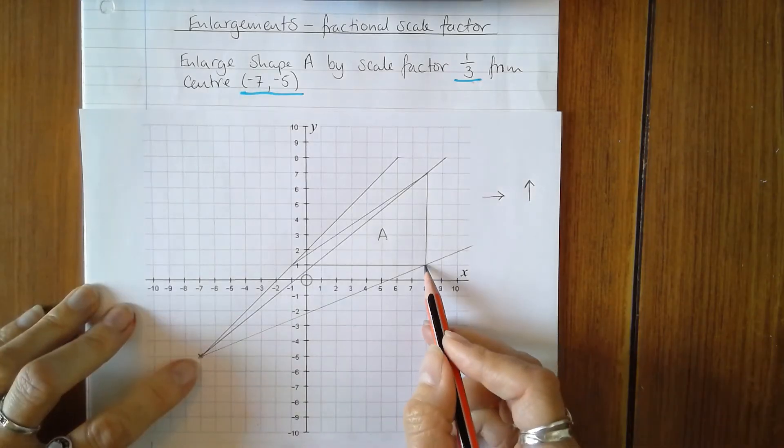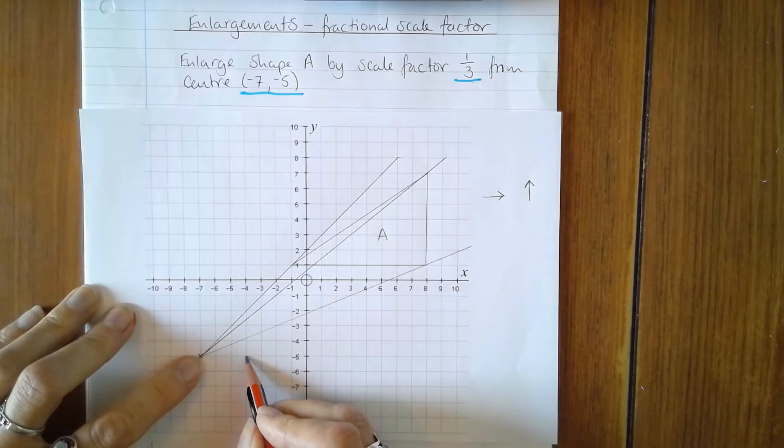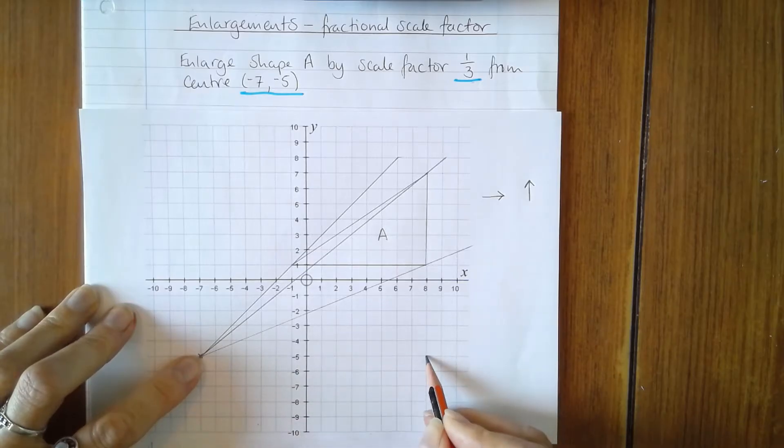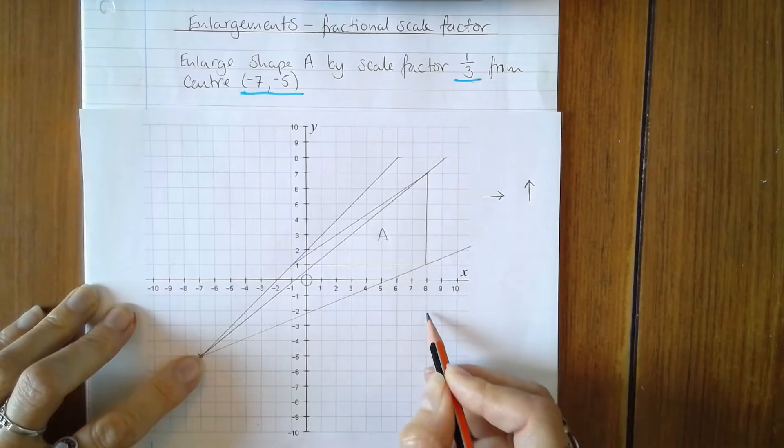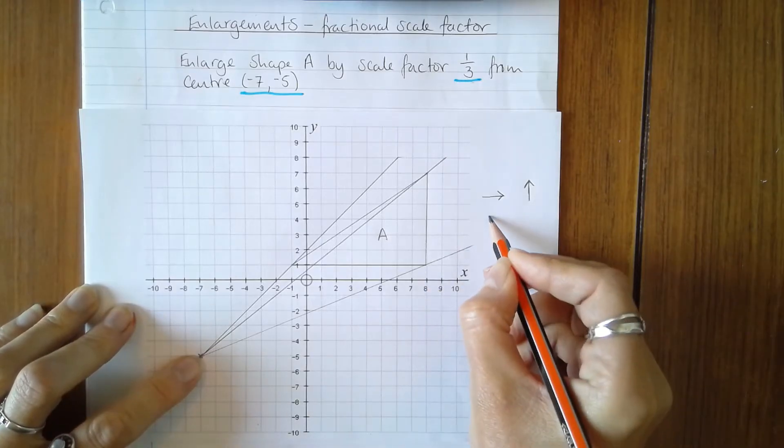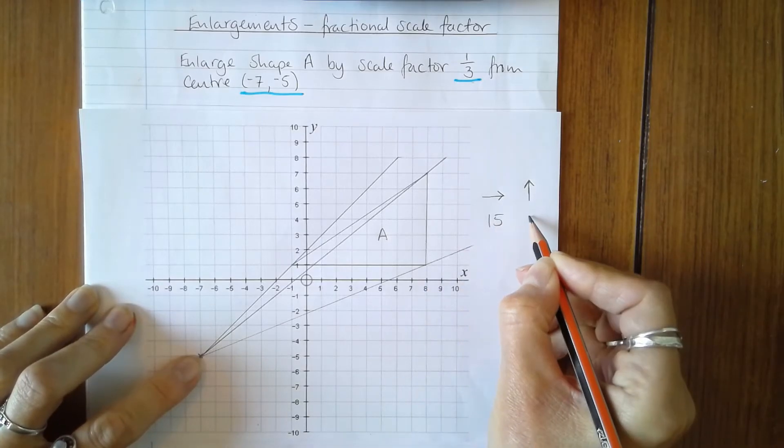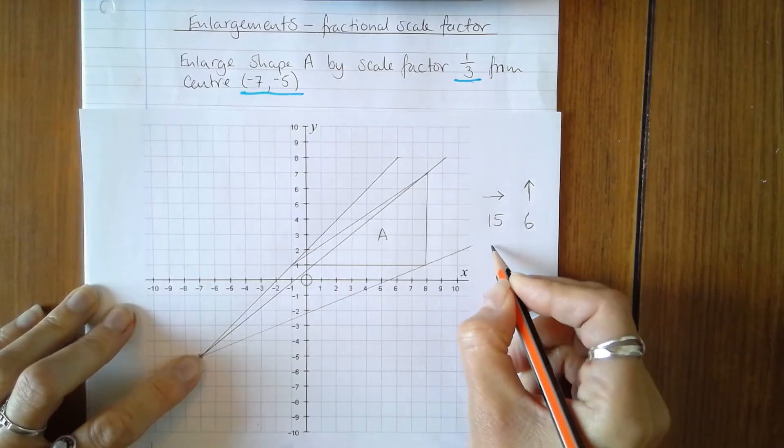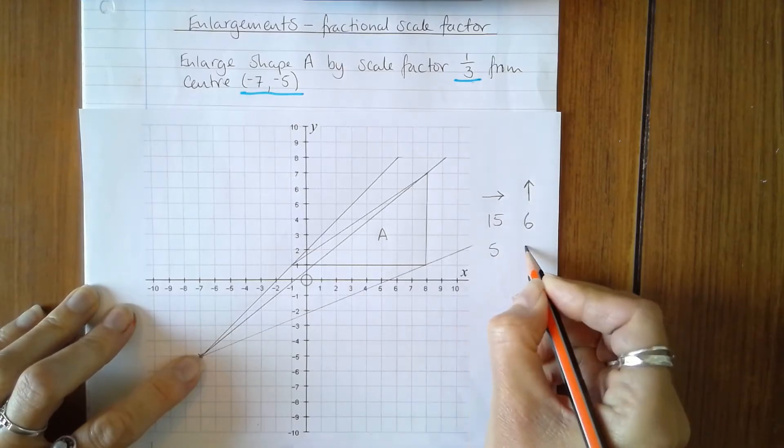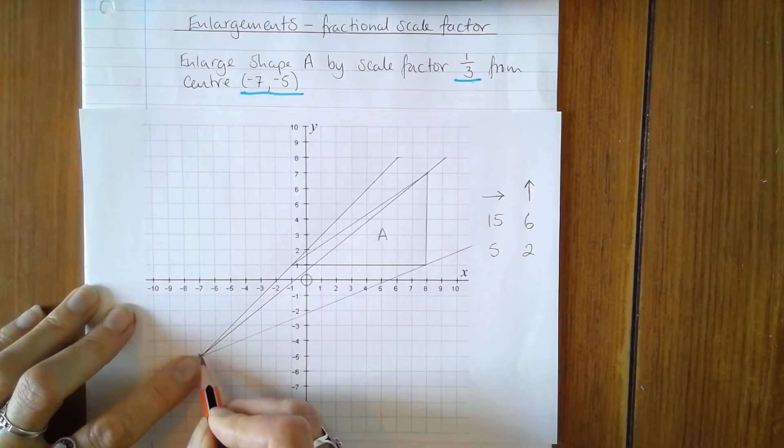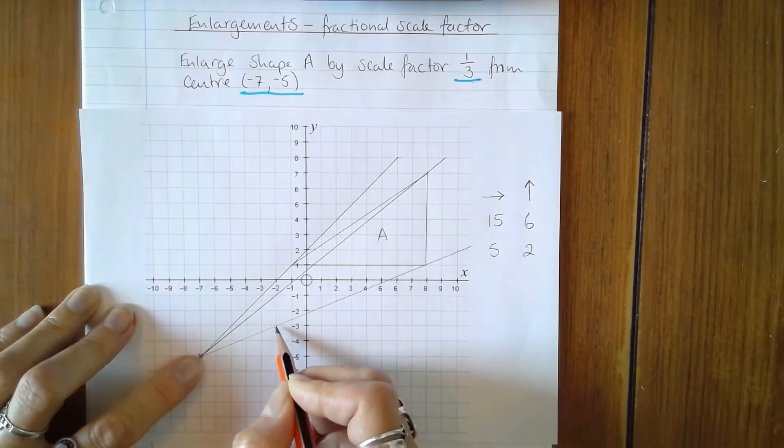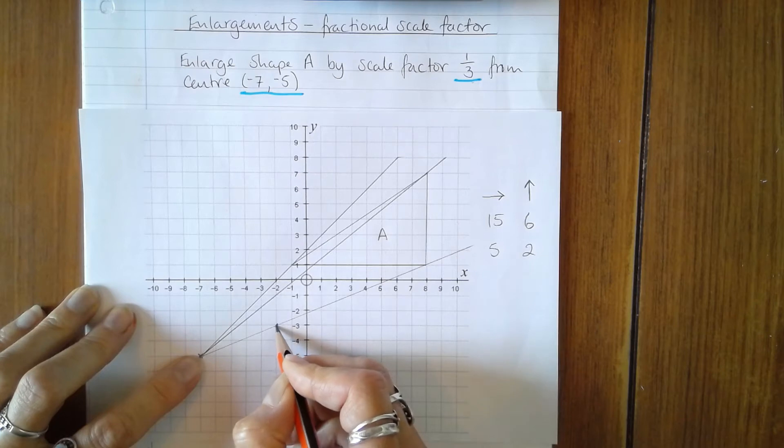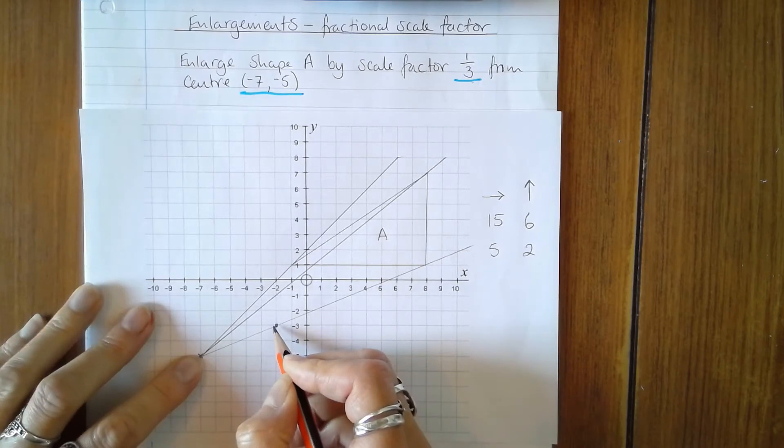The first vertex is 3, 6, 9, 12, 15 across to the right and 3, 6 up. 15 to the right and 6 up. If I divide both of those by 3, I get 5 across and 2 up. So I go 5 across and 2 up, and my first vertex is here. And that's on the guideline, so I'm confident that I've got that one correct.